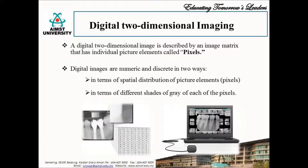Moving to digital two-dimensional imaging. Digital imaging refers to the numeric format of the image content as well as its discreteness. This two-dimensional image is described by an image matrix where the spatial distribution of individual picture elements are present, called pixels, described in terms of different shades of grey, as can be seen in a photograph.